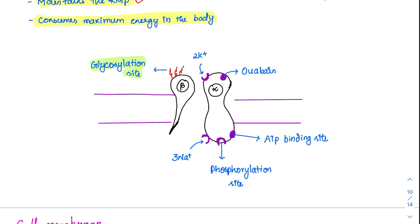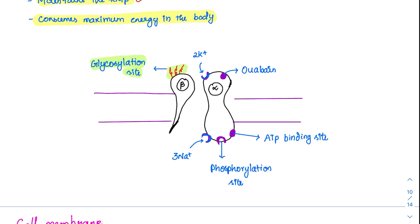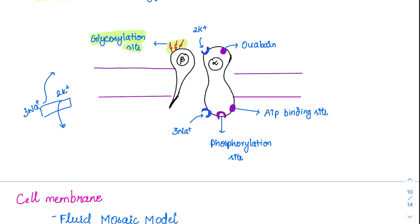The beta subunit is an accessory subunit with no specifically defined function; it has glycosylation sites on its tip. The alpha subunit is the active site: it binds to potassium outside and brings it in, while simultaneously binding to three sodium ions from the inside and throwing them out. So three sodium ions move out and two potassium ions move inside — that is why it is called a 3:2 electrogenic pump. Other important sites include the ouabain-binding site on the outside and the phosphorylation site and ATP-binding site on the inside.